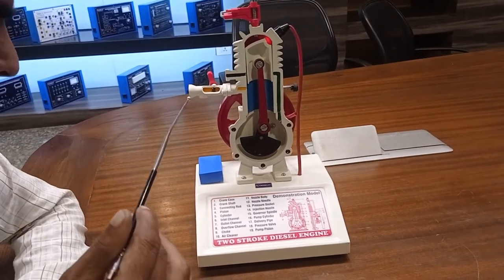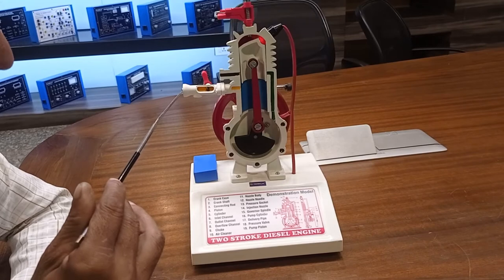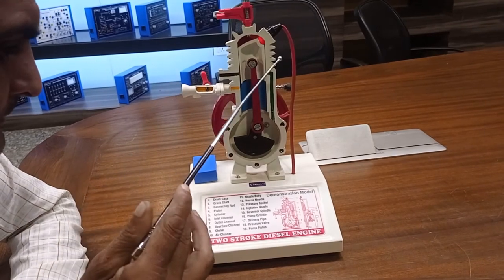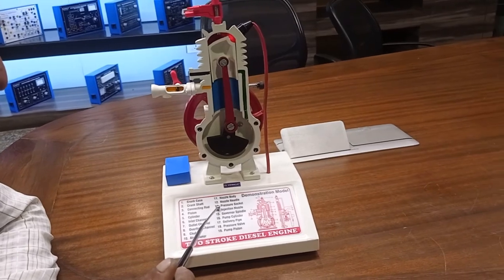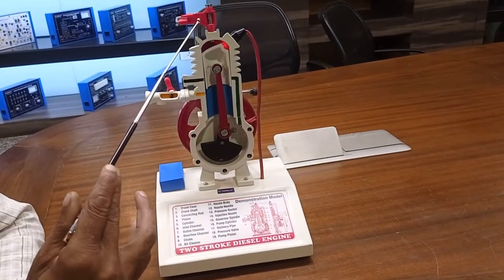This is the inlet channel, outlet channel. The chop is there, this is the chop. Air cleaner for feeding the air.